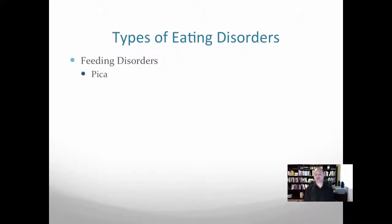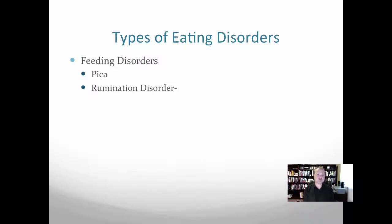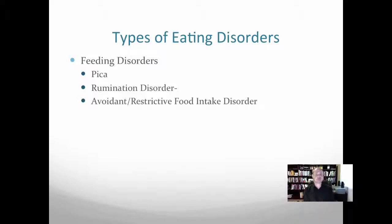Pica is simply a term for eating inedible objects, such as dirt, plants, or rocks. Rumination disorder is simply regurgitating your food and re-eating it. Avoidant and restrictive food intake disorder is a little bit more than just picky eating — these are individuals that will not eat certain classes of food or avoid eating altogether, not for the purpose of losing weight. Just be aware of those feeding disorders.